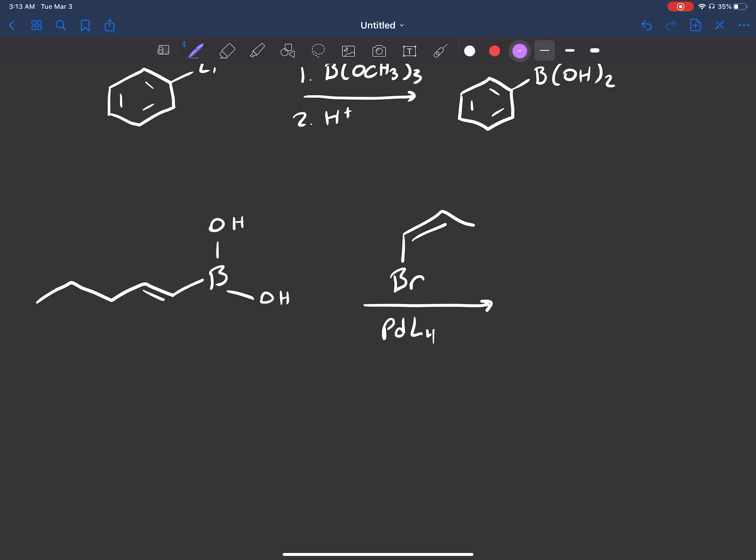And now we need to react it with that green R group bound to halogen. This can be a vinyl or aryl halide or a triflate. Let's just do a vinyl halide to keep things simple. So here it is. Now let's number our carbons: 1, 2, 3, 4, 5, 6, 7, 8.